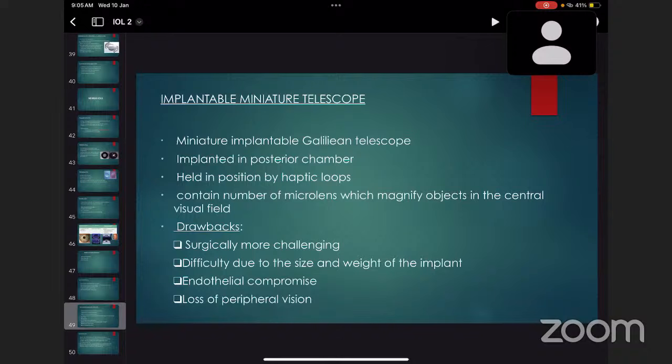Second is implantable miniature telescope intraocular lenses. These are miniature implantable Galilean telescope implanted in posterior chamber, held in position by haptic loops, and contain number of micro lenses which magnify objects in the central visual field. These are mostly used in patients with ARMD. Drawbacks: surgically more challenging, difficulty due to size and weight of implant, endothelial compromise, and loss of peripheral vision.